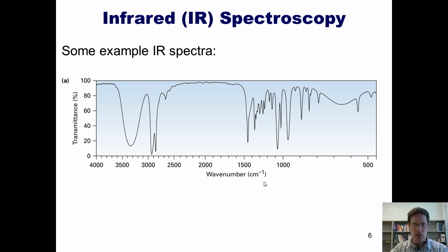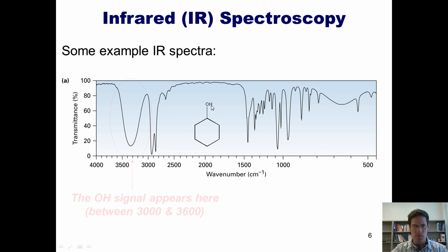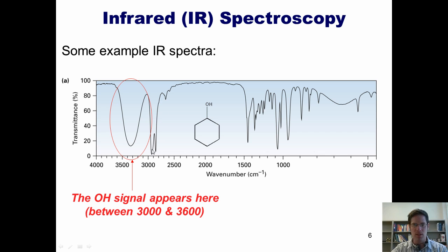Here's the IR spectrum for cyclohexanol. Does this molecule contain any of the functional groups? Yes — it has an OH right here. So we see a broad, large trough between 3000 and 3600, just as described. These little spiky peaks here are CH bonds originating from the carbon-hydrogen bonds in this molecule.